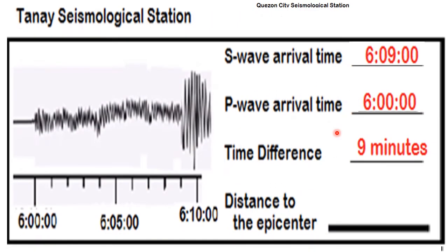Next, let's have the Tanay Seismological Station. The S wave arrived at 6:09, and the P wave arrived at 6:00. The time difference on the arrival time is 9 minutes.